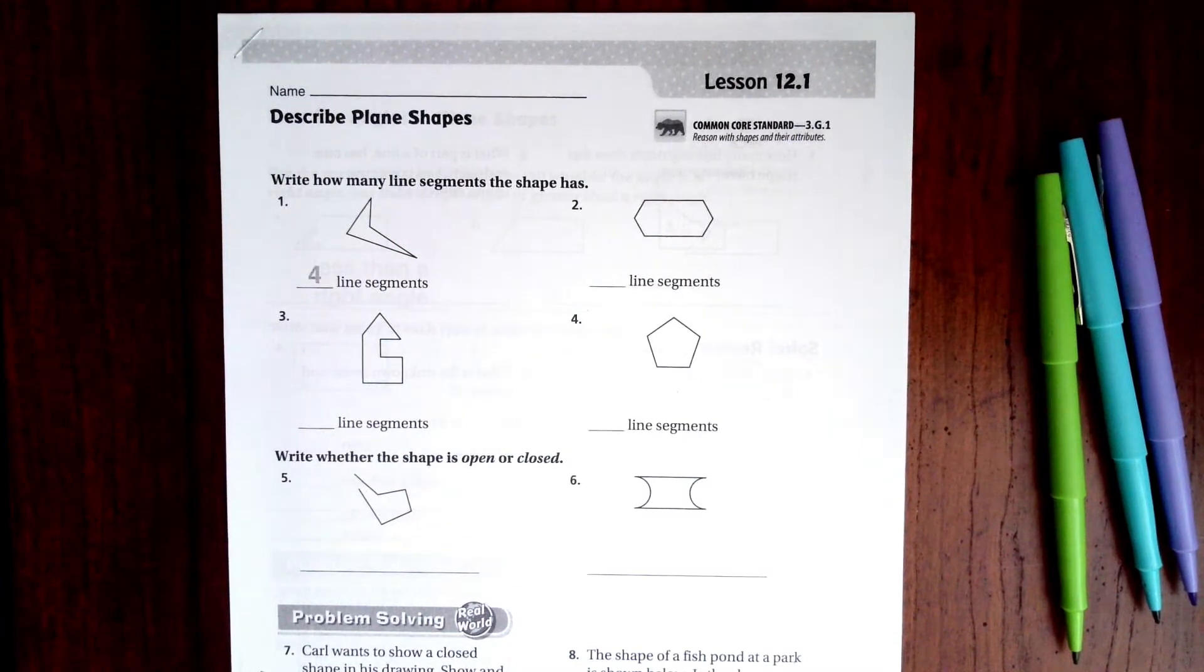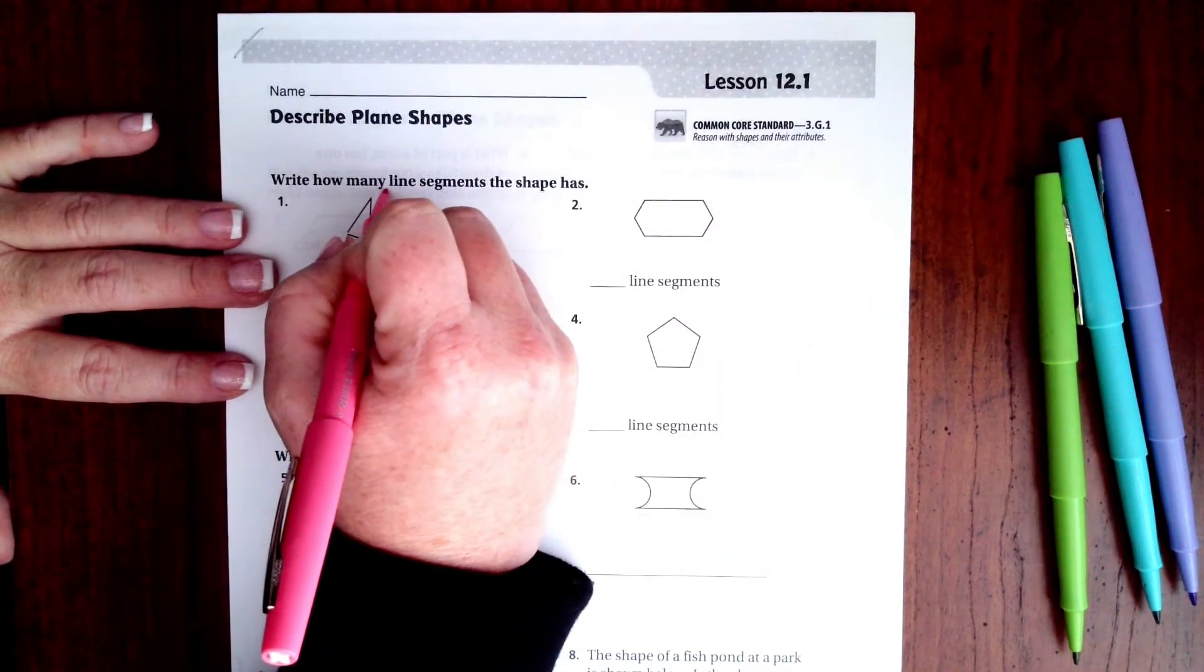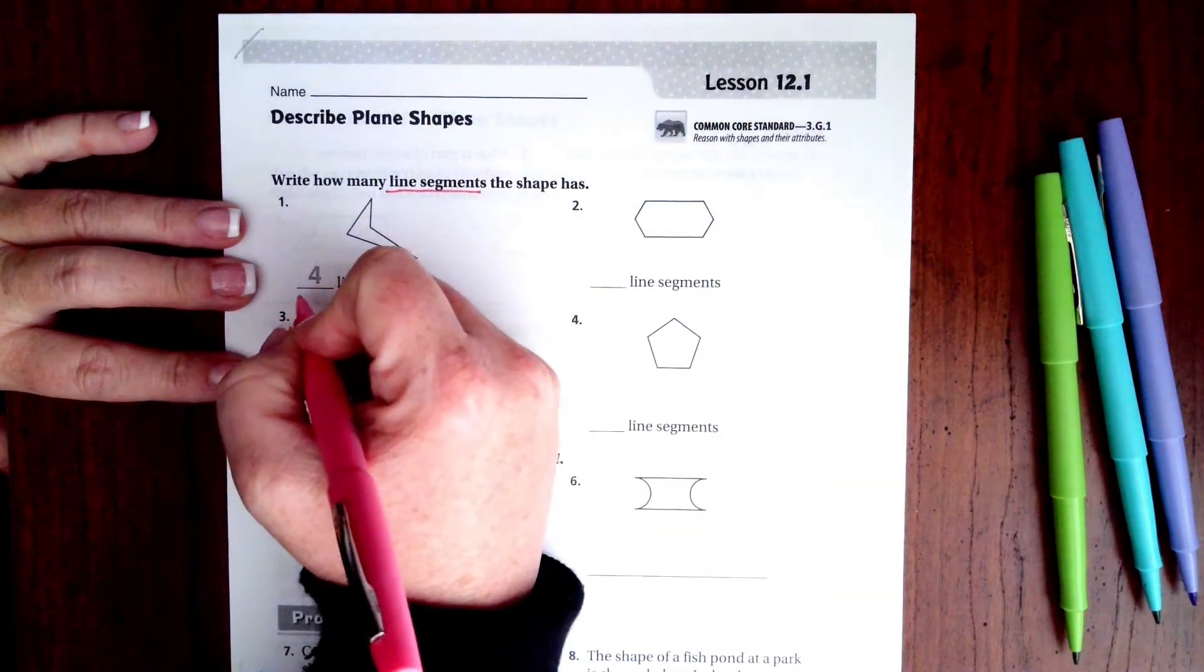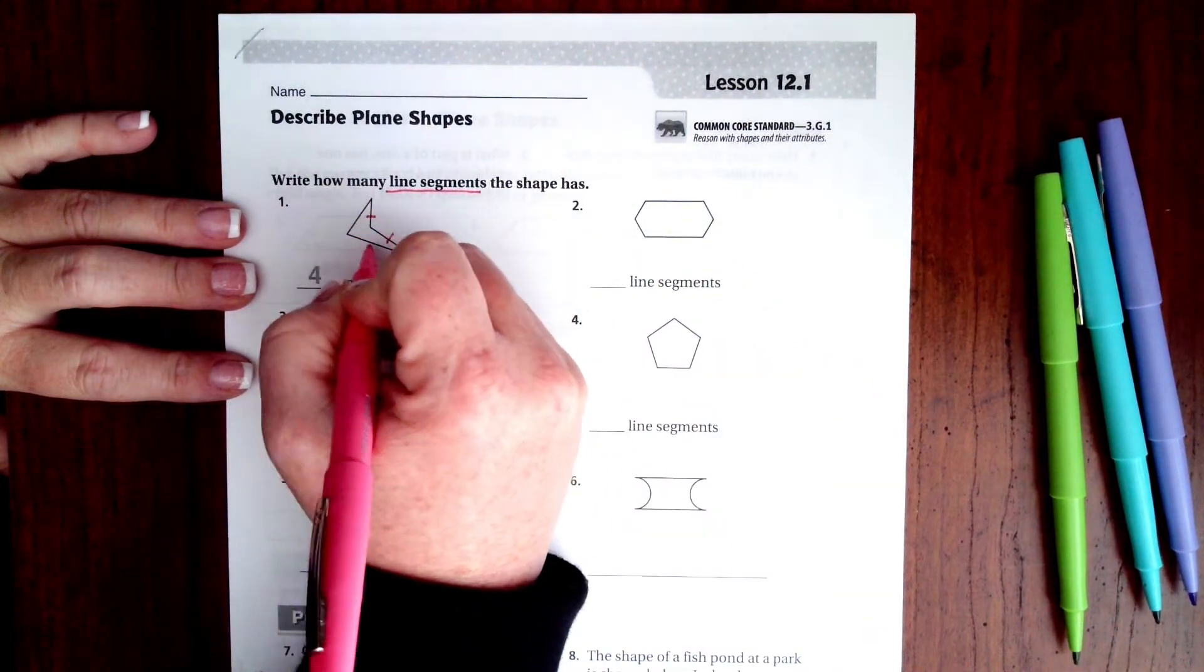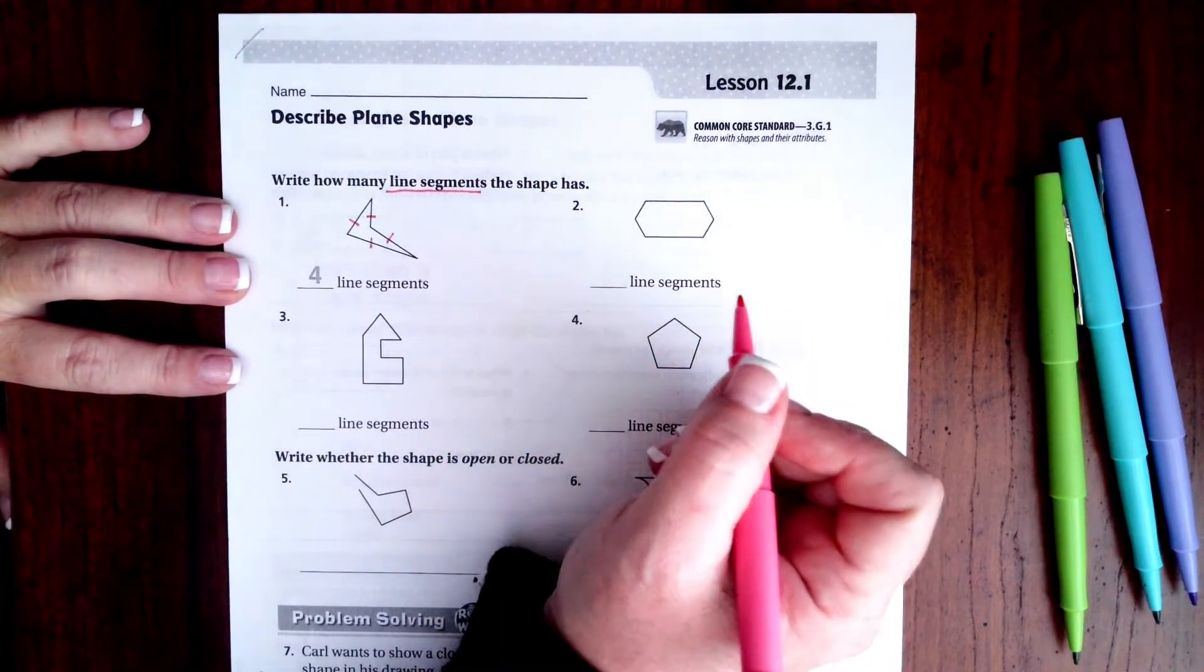Hi guys, welcome to third grade chapter 12 lesson 1. We're going to get started. First, I want you to understand that when they say line segments, that just means how many sides. So on this one where it says four, there's one, two, three, four sides, so there's four line segments. That's all that means.